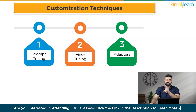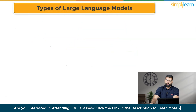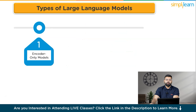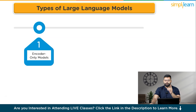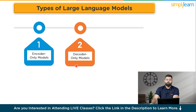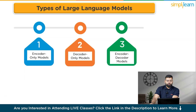There are three types of large language models. Encoder-only models, such as BERT (Bidirectional Encoder Representations from Transformers), excel at understanding tasks like classification and sentiment analysis. Decoder-only models, such as GPT-3 (Generative Pre-trained Transformer 3), are great at generating text like stories or articles. Encoder-decoder models, such as T5 (Text-to-Text Transfer Transformer), combine understanding and generation, making them ideal for tasks like translation and summarization.